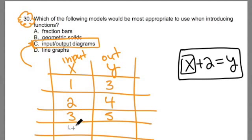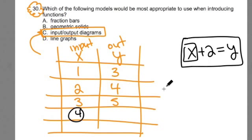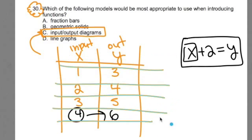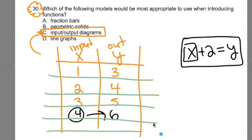So if you input, let's say, a 4, and add 2 to it, out should come a 6. This input-output chart helped me figure out what is the function or relationship between x and y.